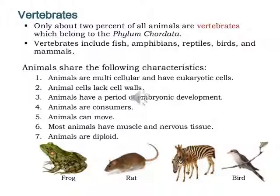Animals are heterotrophic consumers — we rely on autotrophs for food. Animals can move; they have muscles and nervous tissues. Animals are diploid, meaning we inherit genes from both parents. Examples of vertebrates we see in daily life include frogs, rats, zebras, birds, and humans.